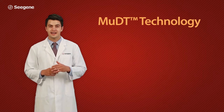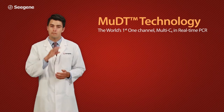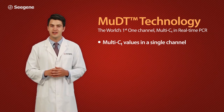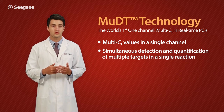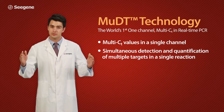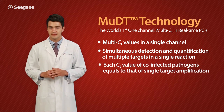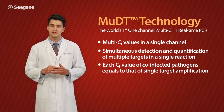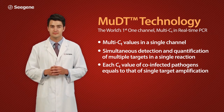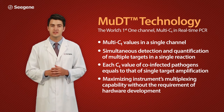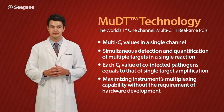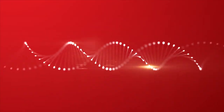MUDT technology — the world's first one-channel multi-CT in real-time PCR. Multi-CT values in a single channel. Simultaneous detection and quantification of multiple targets in a single reaction, where each CT value of co-infected pathogens equals that of single-target amplification. Maximizing an instrument's multiplexing capability without the requirement for hardware development.